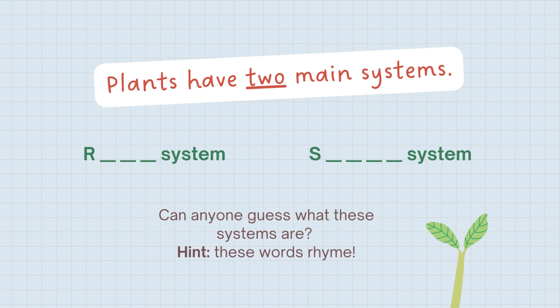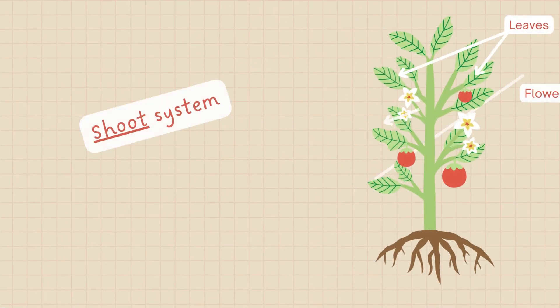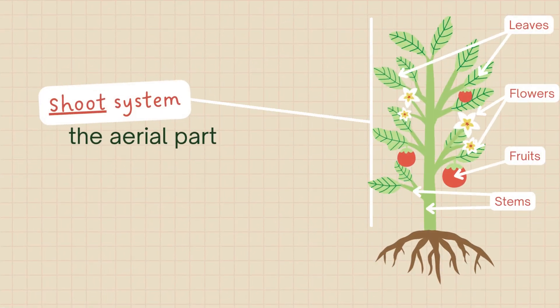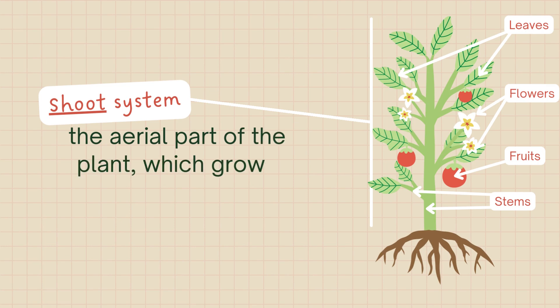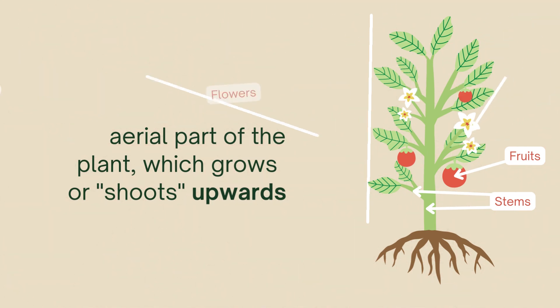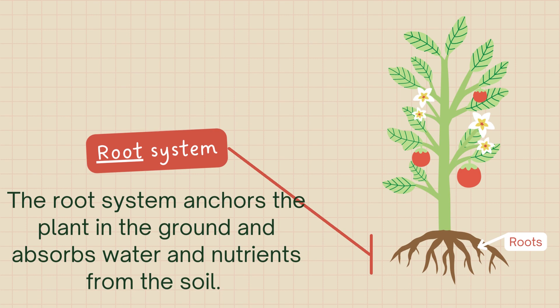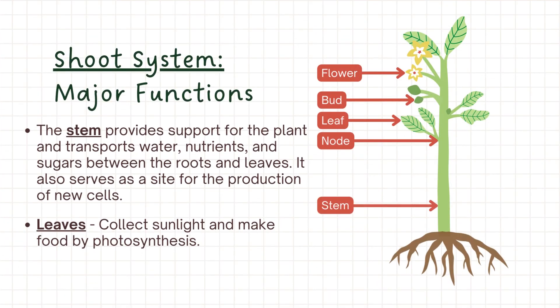Here's a hint: those systems are rhyming words. The first one is the shoot system. The aerial part of the plant which grows or shoots upwards is called the shoot system. The root system anchors the plant in the ground and absorbs water and nutrients from the soil.